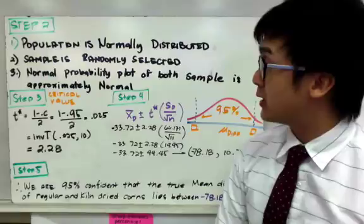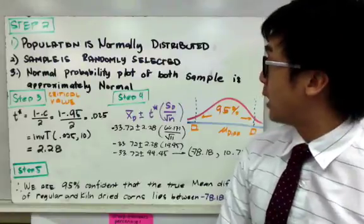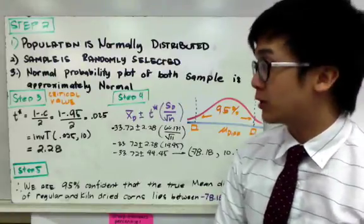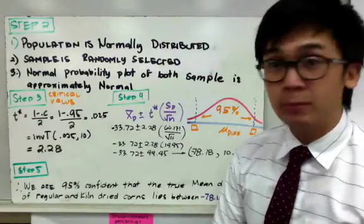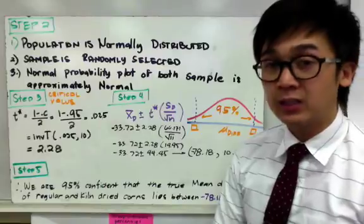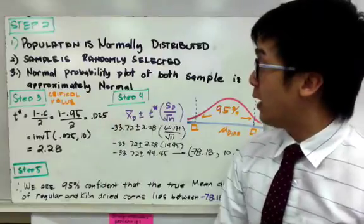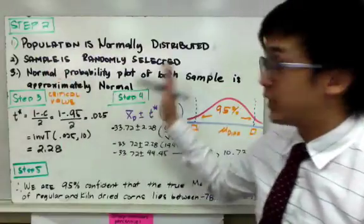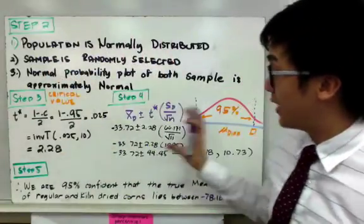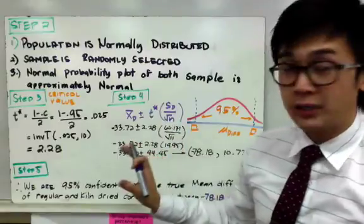And for the third condition, the normal probability plot of both sample is approximately normal. So for sample A and sample B, if you use your normal probability plot in your calculator, you will see that it gives you a normal approximation. So therefore, our conditions are satisfied so we can work with our confidence interval without any precaution.